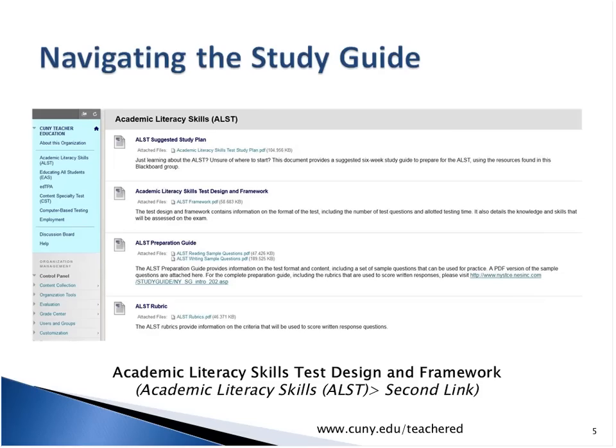The study plan gives you a week-by-week approach to using the resources in the Blackboard Group. Under the title of each resource, there's a path written in parentheses that shows you how to locate it. For example, if you want to find the ALST Test Design and Framework listed at the bottom of the screen, you would follow the path by going first to the ALST folder, and then down to the second link listed.